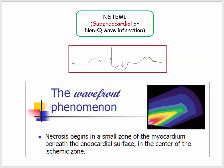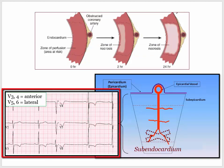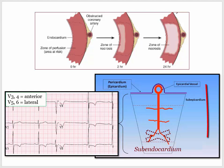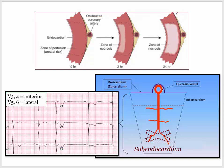A quick word on what the USMLE likes to emphasize with subendocardial infarction. Besides the fact that ST segments are depressed, not elevated, they want you to think about the vulnerable zones of ischemia. This is described by the wavefront phenomenon, which highlights that the subendocardium is the region most distant from the epicardial vessels and therefore most vulnerable. If they ask a question on this topic, it will focus on the most vulnerable zone of ischemia or the zone demonstrating initial injury after a vessel is occluded.